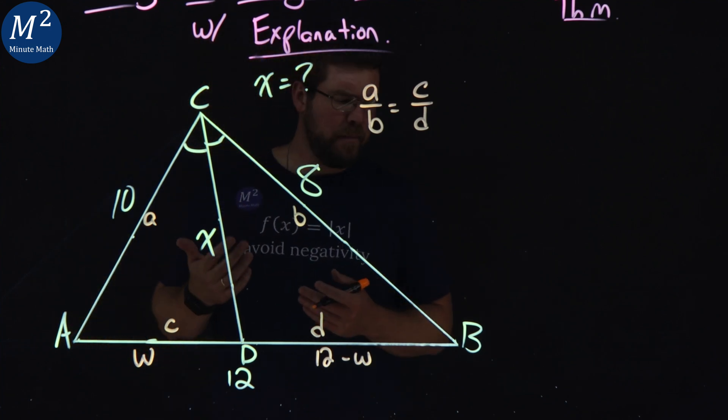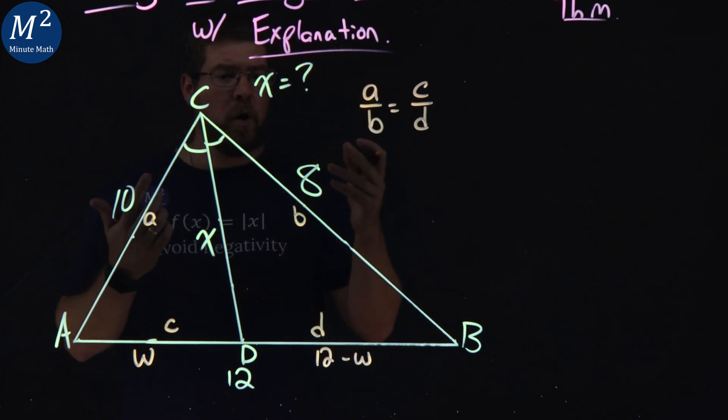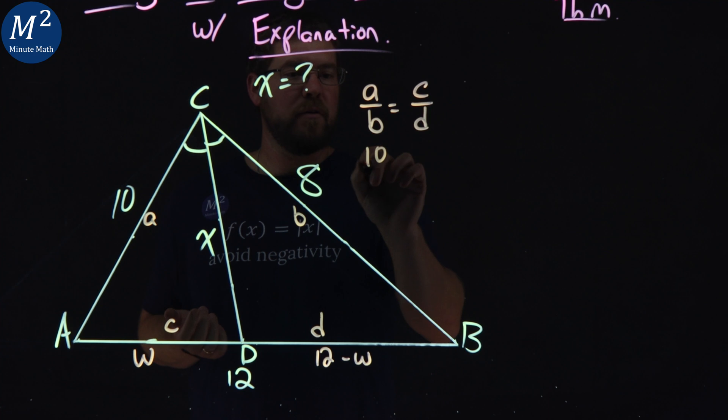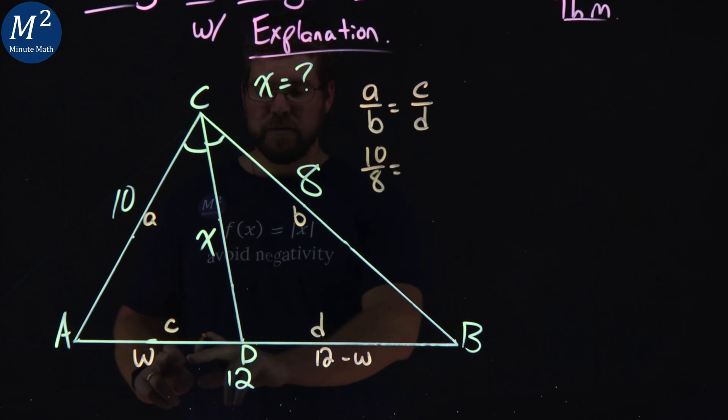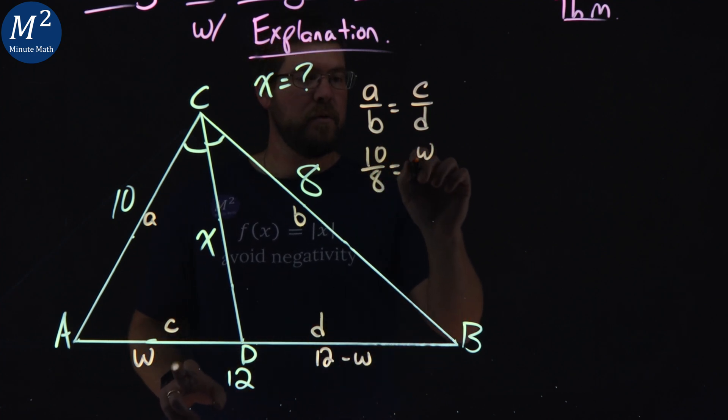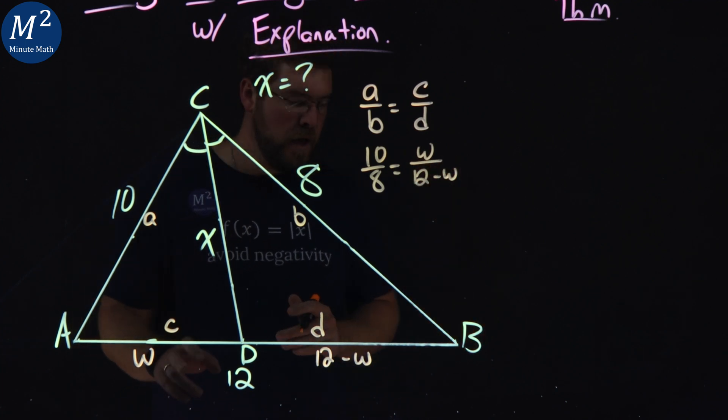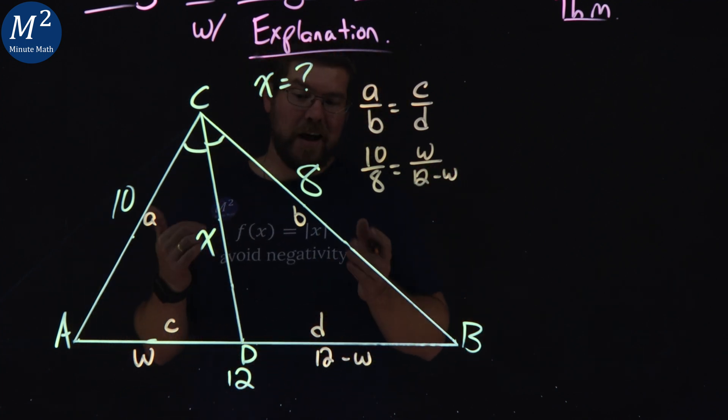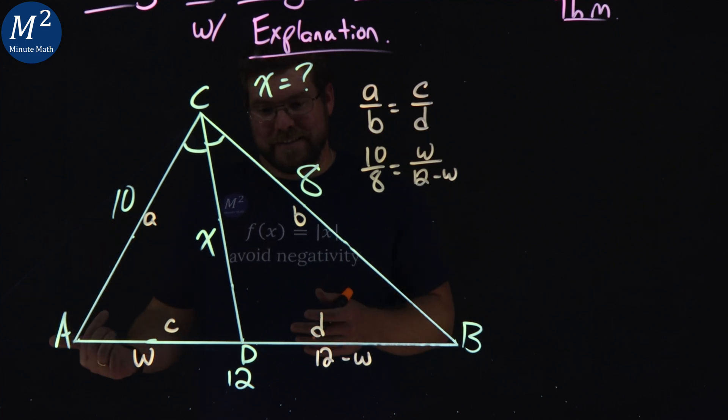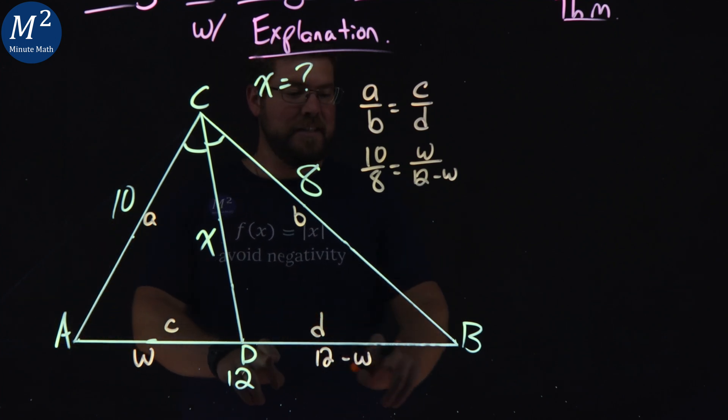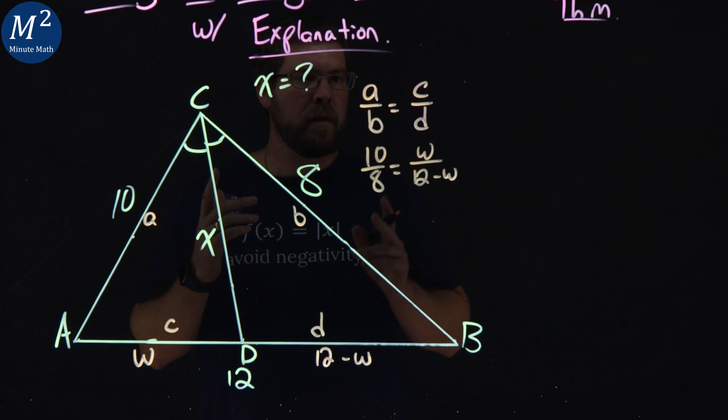So now with this information, we can set up a proportion. a over b, which is 10 over 8, is equal to c over d, w over 12 minus w. Now from here, it'd be nice if we can figure out what w is, and then also get what DB is with it.